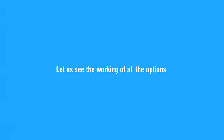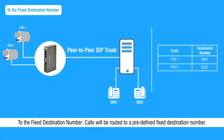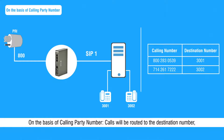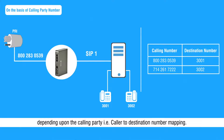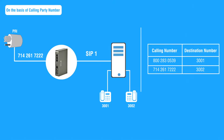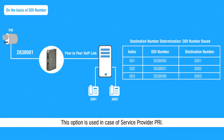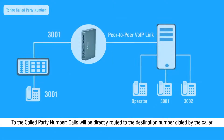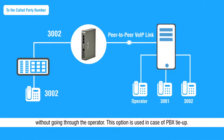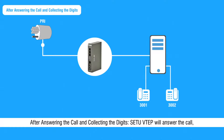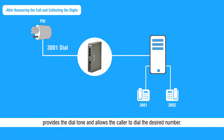'To the fixed destination number' — calls will be routed to a predefined fixed destination number. 'On the basis of calling party number' — calls will be routed to the destination number depending upon the calling party, i.e., caller-to-destination number mapping. 'On the basis of DDI number' — calls will be routed as per the DDI, i.e., direct dial-in logic configured; this option is used in the case of service provider PRI. 'To the called party number' — calls will be directly routed to the destination number dialed by the caller without going through the operator; this is used in case of PBX tie-up. 'After answering the call and collecting the digits' — Setu VTAP will answer the call, provide the dial tone, and allow the caller to dial the desired number.